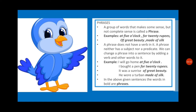'For 20 rupees', 'of great beauty', 'made of silk' — these are all phrases because they are not conveying a complete meaning. 'Made of silk' — we have no idea what is made of silk. An important point about a phrase: a phrase does not have a verb in it, and a phrase neither has a subject nor a predicate, unlike a sentence. We can change a phrase into a sentence by adding a verb and other words to it.